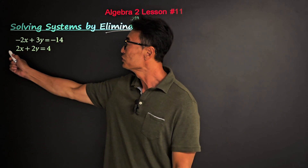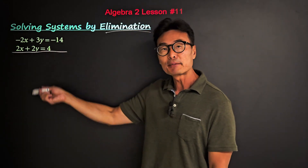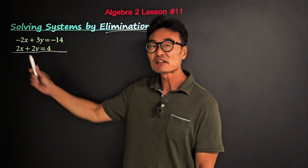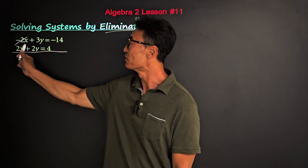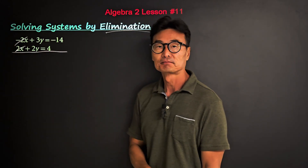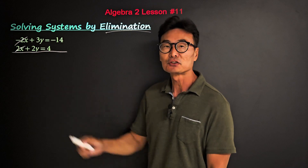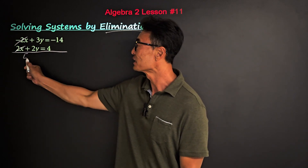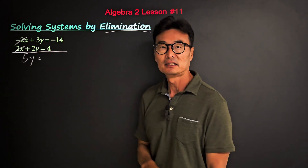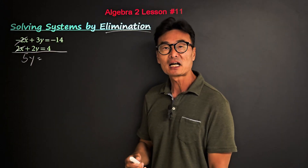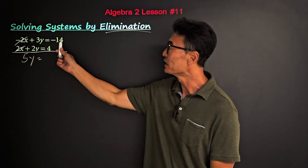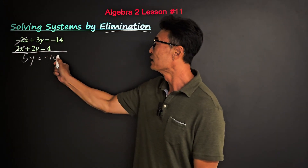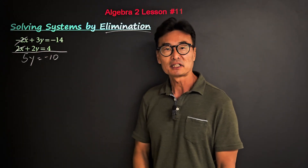If we simply add up and down, notice that negative 2x and 2x will cancel each other out, and 3y and 2y added together give us 5y. Adding the right sides, negative 14 and 4 gives us negative 10.